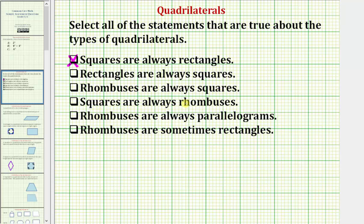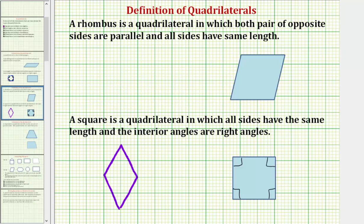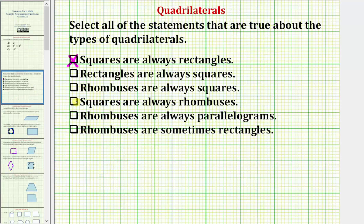The next statement is: squares are always rhombuses. Let's sketch a square and see if it satisfies the definition of a rhombus. A rhombus is a quadrilateral in which both pairs of opposite sides are parallel and all sides have the same length. For a square, all sides have the same length and opposite sides are parallel, which means squares are always rhombuses. This fourth statement is true, so we check it.